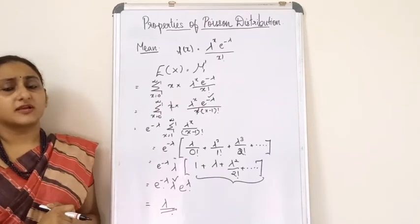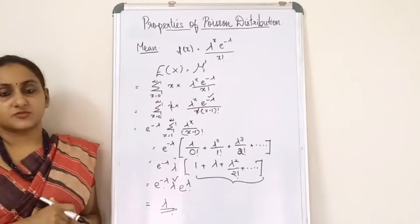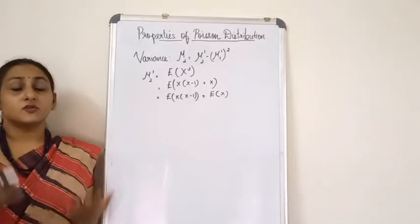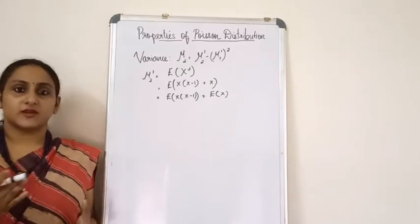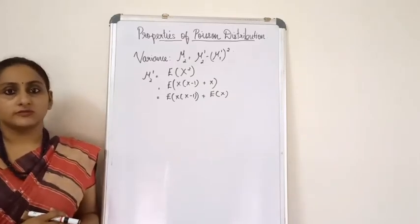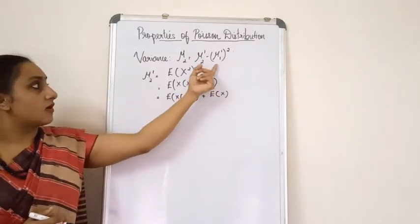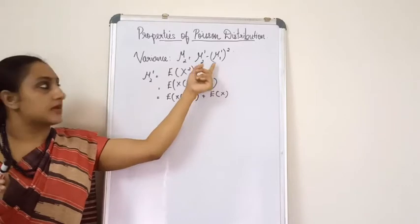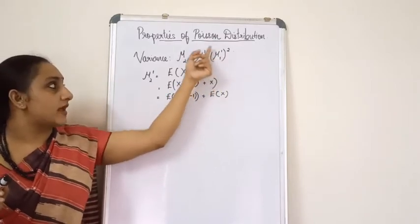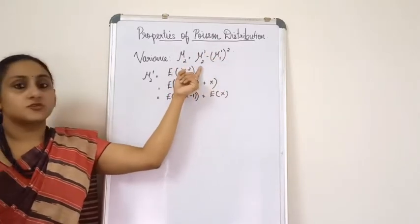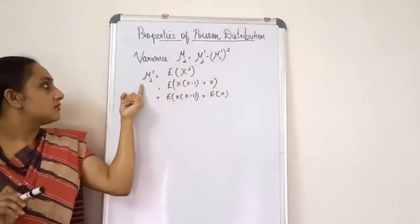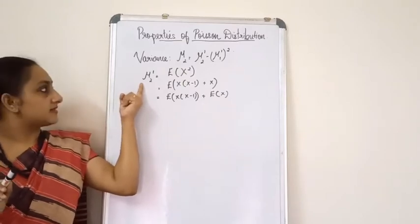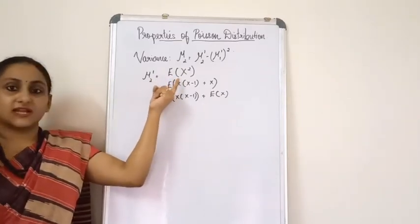Now let's find the variance of the Poisson distribution. Variance in terms of central moments is μ₂ = μ₂' − (μ₁')². We already know μ₁' = λ, so we need to find μ₂', which equals E[X²].